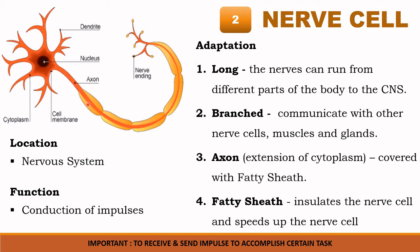Nerve cell adaptation: if you look at this picture, it is very clear that nerve cells are long. A normal cell has cytoplasm, nucleus, and mitochondria, but this nerve cell is totally different — it is very long and also branched. The longness allows it to connect to different parts of the body and the central nervous system, and the branching allows it to communicate with other neurons, muscles, and glands. The cytoplasm is extended, and we call this extension the axon. The axon has a yellow fatty layer called the myelin sheath.